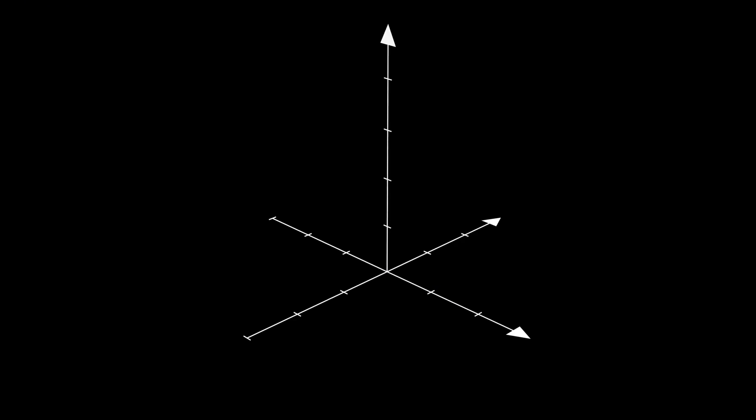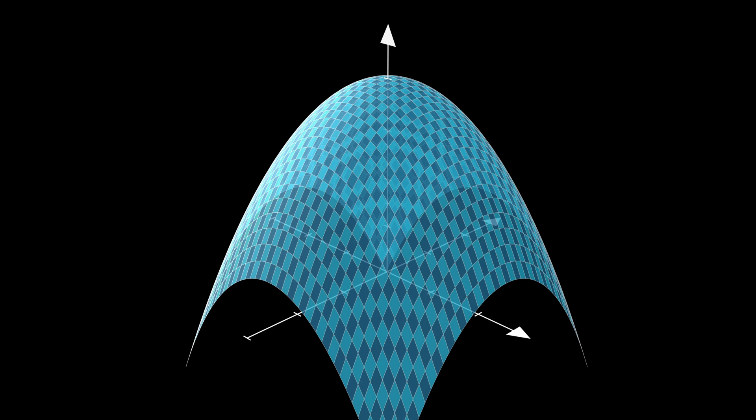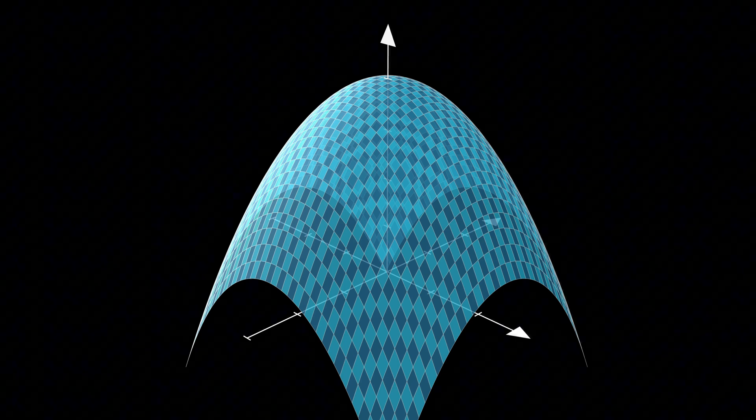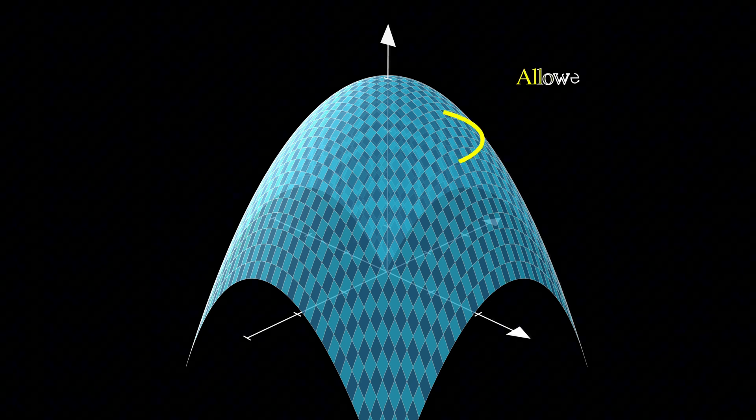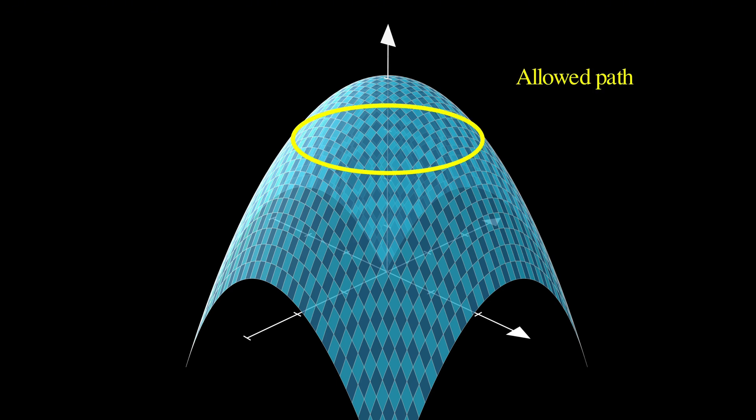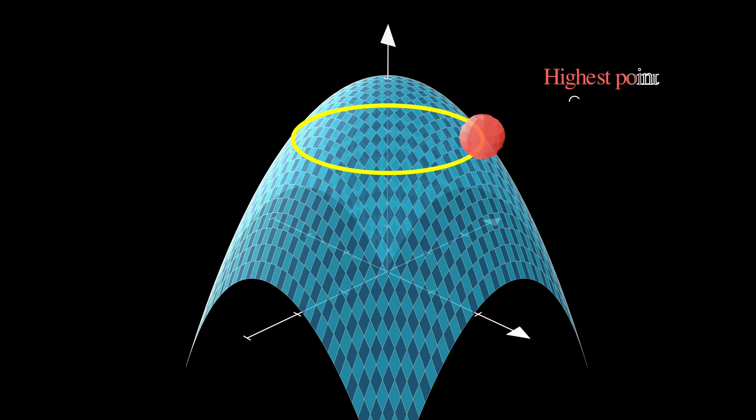Picture this, you're standing on a mountain which creates this beautiful peak that rises up from the landscape. Now here's where it gets interesting. You can't just walk anywhere on this mountain, instead you're restricted to follow this specific yellow path that circles around the peak and your goal is to find the highest point you can reach while staying on this allowed path.